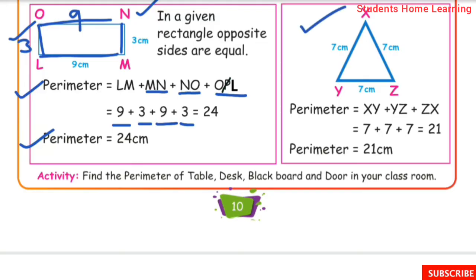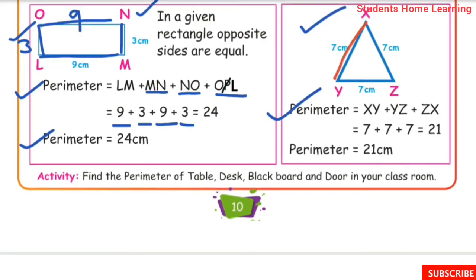Next one: triangle. To find the perimeter of a triangle, add all sides. Perimeter equals XY plus YZ plus ZX. All sides measure 7 cm each, so 7 plus 7 plus 7 equals 21. Perimeter is equal to 21 cm.